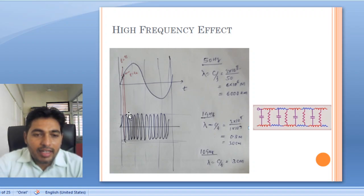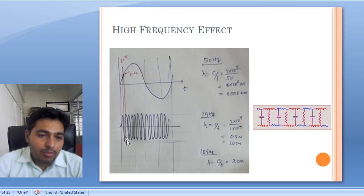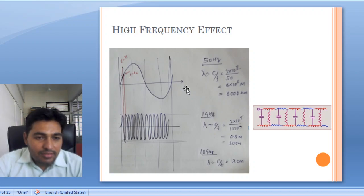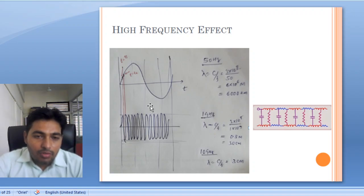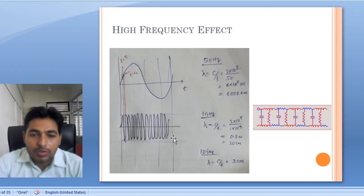But if we go to higher frequency, at the same points T1 and T2 you can see the amplitude will be at negative maximum at one point and zero at T2. So there will be very large change in phase as well as amplitude because of high frequency. The component designed for low frequency will not be useful at higher frequencies, where there is very large phase and amplitude change.